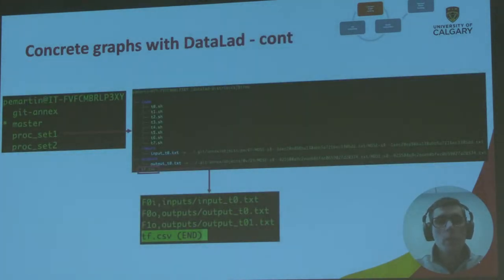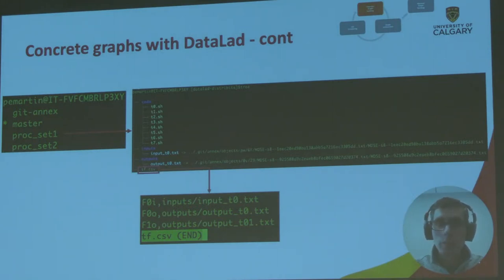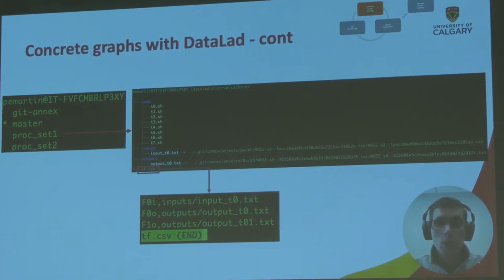We have almost everything we need: an abstract graph and concrete graphs extracted from provenance. But we need to establish a correspondence between these two. So we have included a file in the root directory of every branch — a translation file that will allow us to map the abstract to the concrete graph. Other approaches such as databases are also possible, but we aim to keep it as simple as possible.